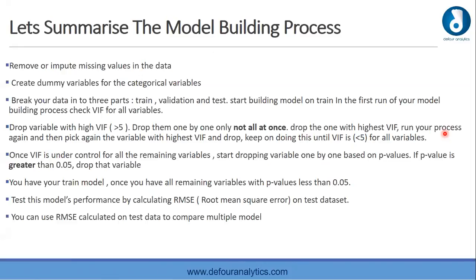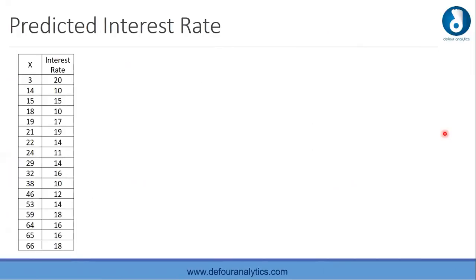Once VIF is under control for all remaining variables, start dropping variables one by one based on p-values. If a p-value is greater than 0.05, drop that variable. Once all remaining variables have p-values less than 0.05, test model performance by calculating the Root Mean Square Error (RMSE) on the test dataset. You can use an RMSE calculator on test data to compare multiple models, and the resulting interest rate predictions are the final output we're working toward.